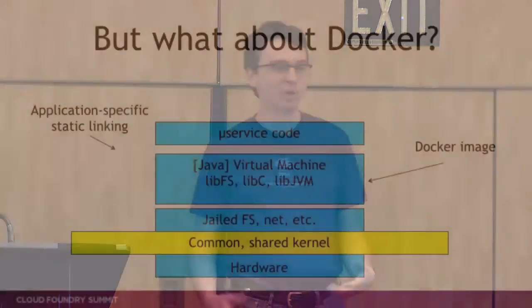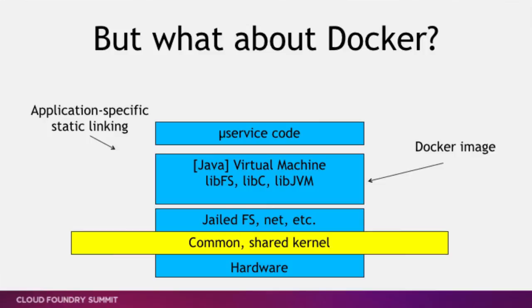I have five minutes left and I have to talk about Docker. This is essentially the same picture as when I introduced OSv, but with a few changes. You still have microservices code and a virtual machine, but instead of the hardware-assisted virtualization layer, you now have a common shared kernel. All Docker containers on a single host share the capabilities of the same kernel, just like OSv images share the virtualization capabilities of Xen or KVM. On top of that shared kernel, Docker provides a jailed file system and virtualized network — you basically have a statically linked image at the level of all bits in the file system.